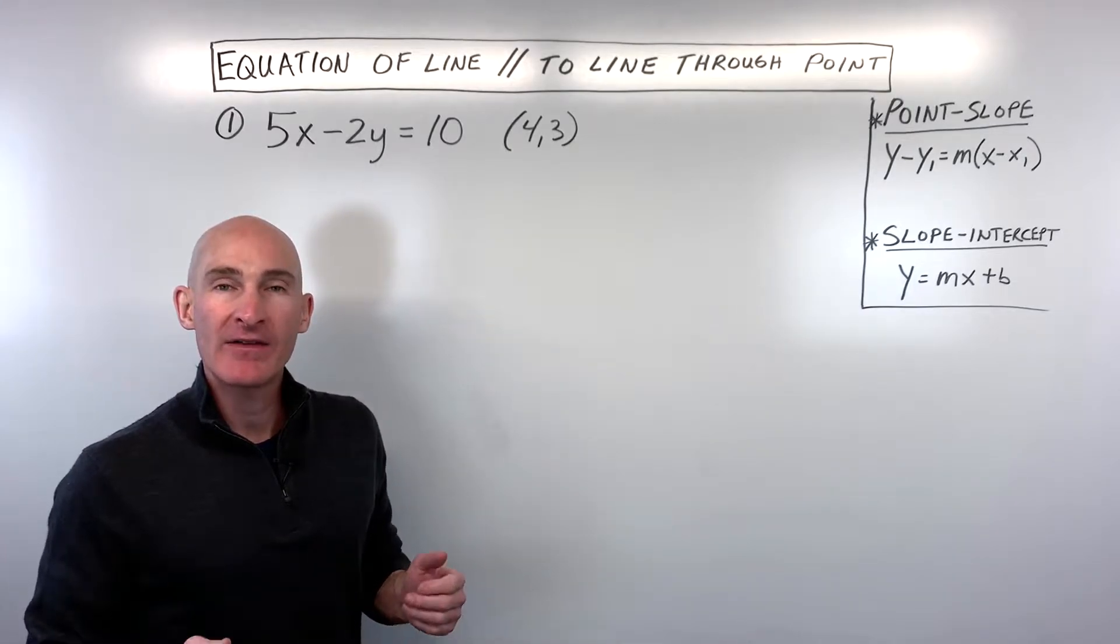In this lesson, we're going to talk about how to find the equation of a line that's parallel to a given line through a given point. So I'm going to go through two different methods that you can use. We're going to go through two examples. I'll show you one method using the first example and the other method using the second example.